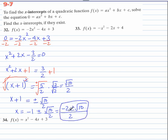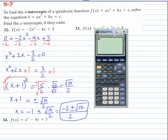So these are our two x-intercepts. Negative 2 plus radical 10 all over 2, and negative 2 minus radical 10 all over 2. Let me show you this on the calculator.